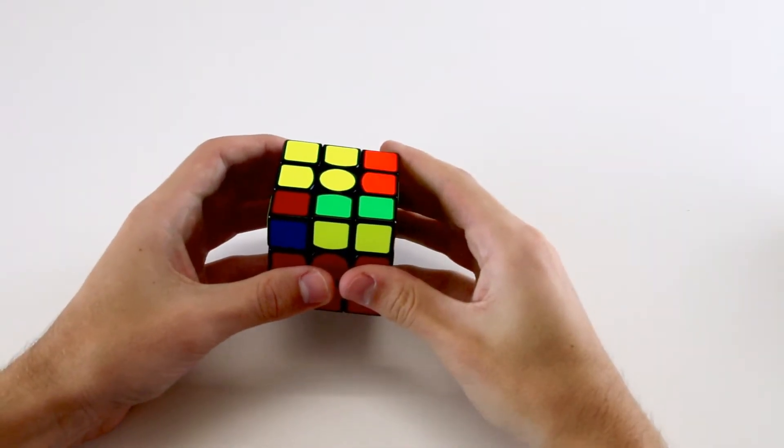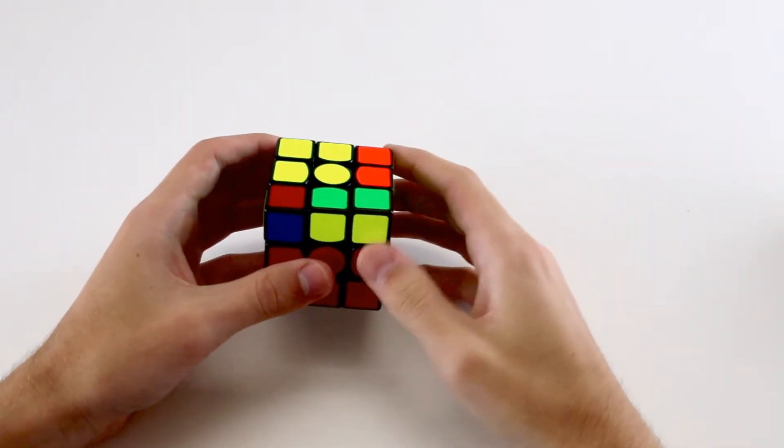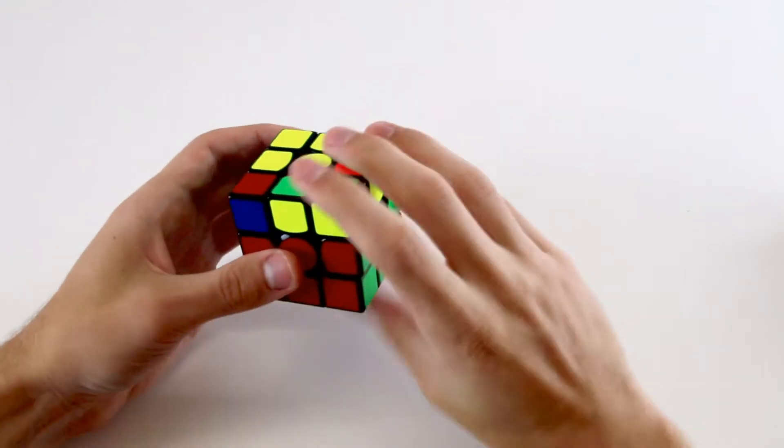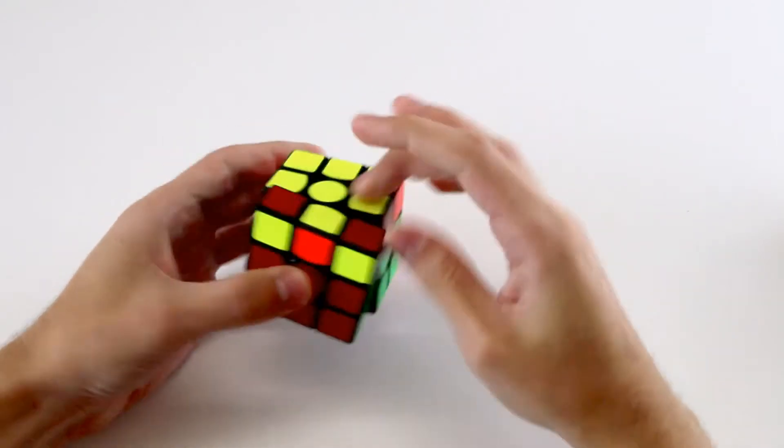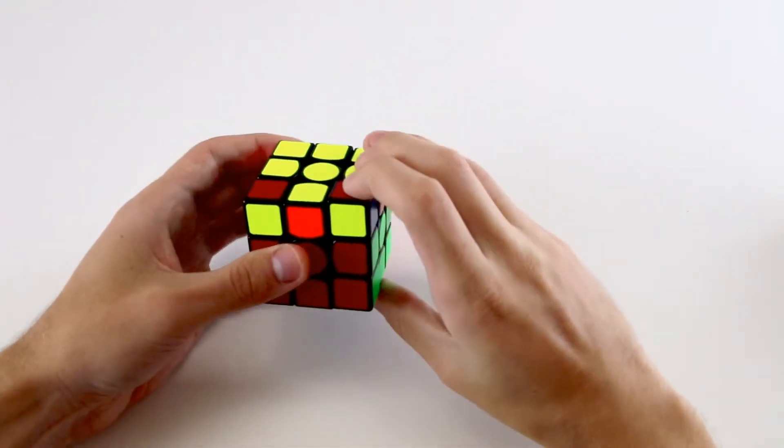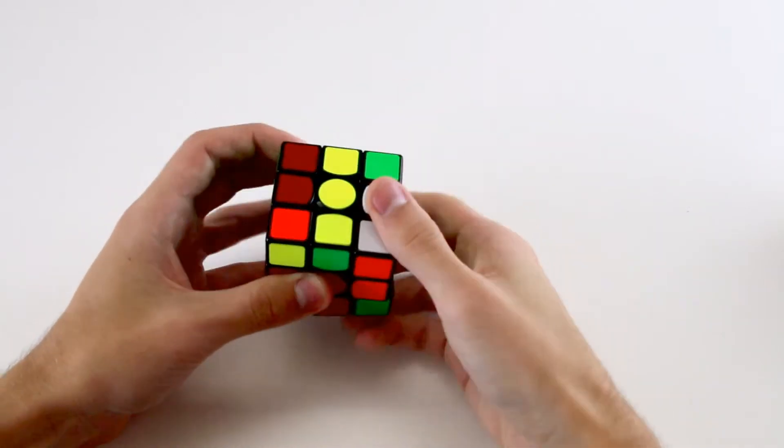So currently you're solving the orientation of the last layer, or OLL, in two steps. Firstly what you're doing is orienting the edges, like that, and then you orient the corners using another algorithm.